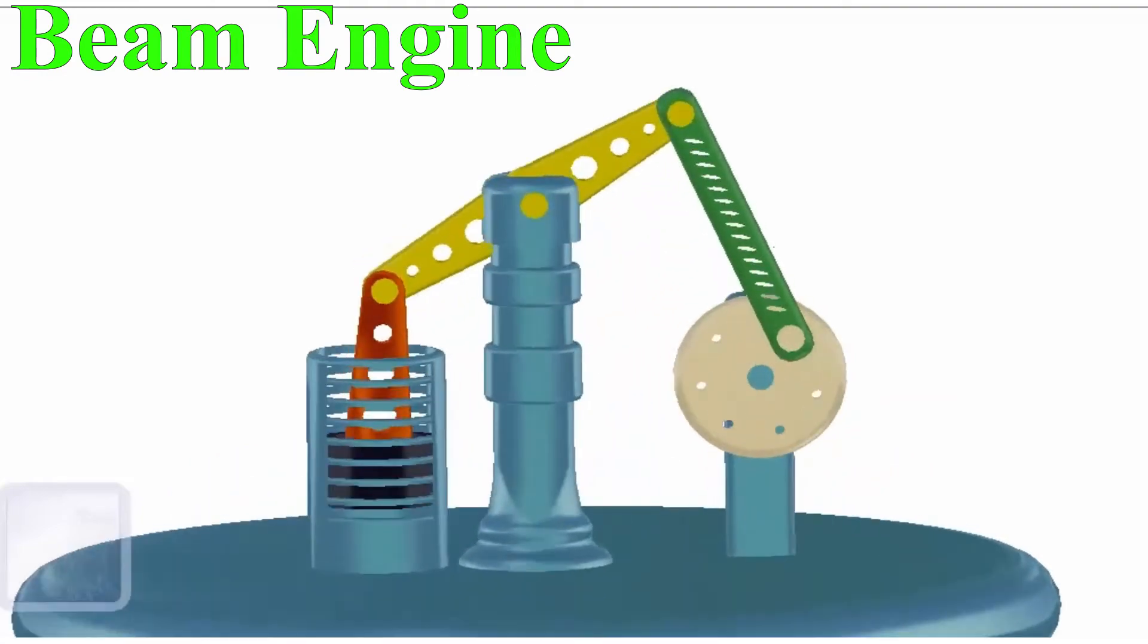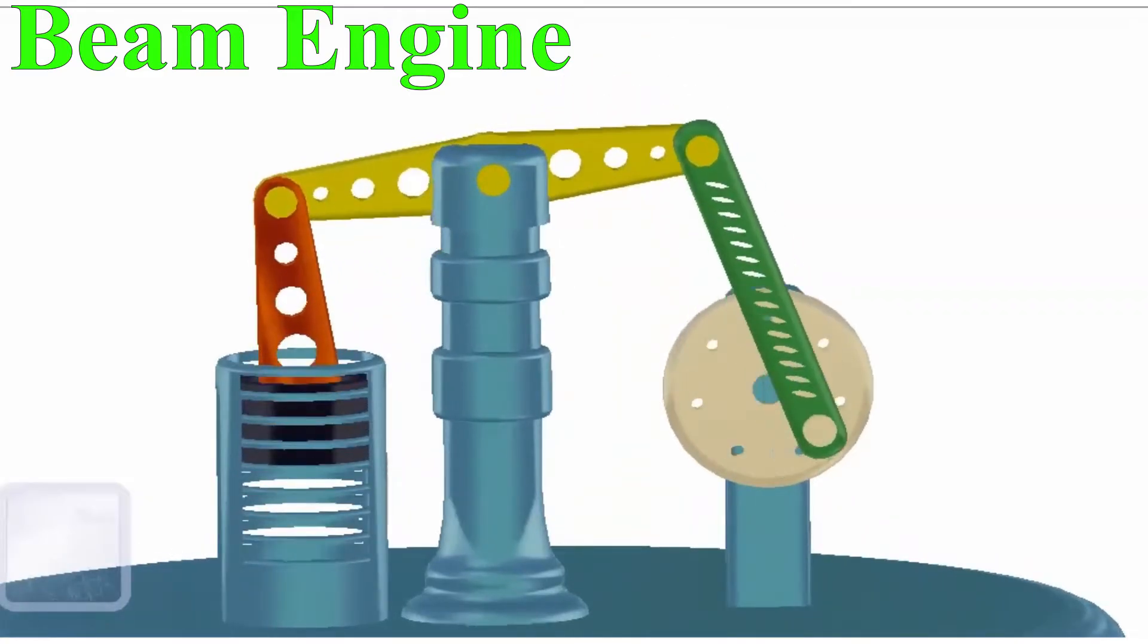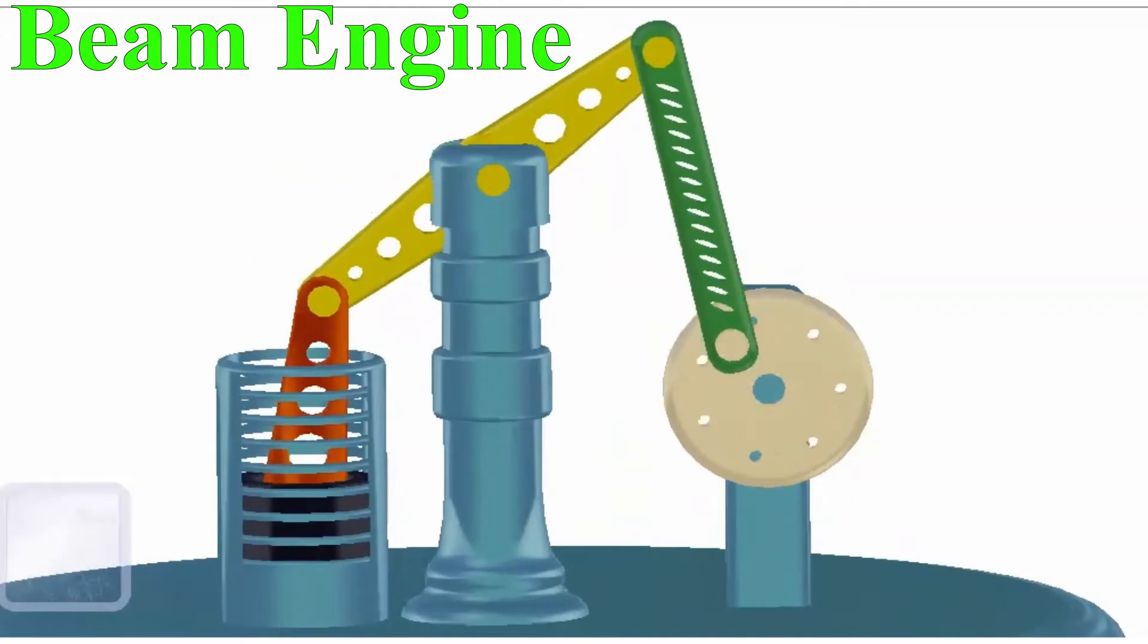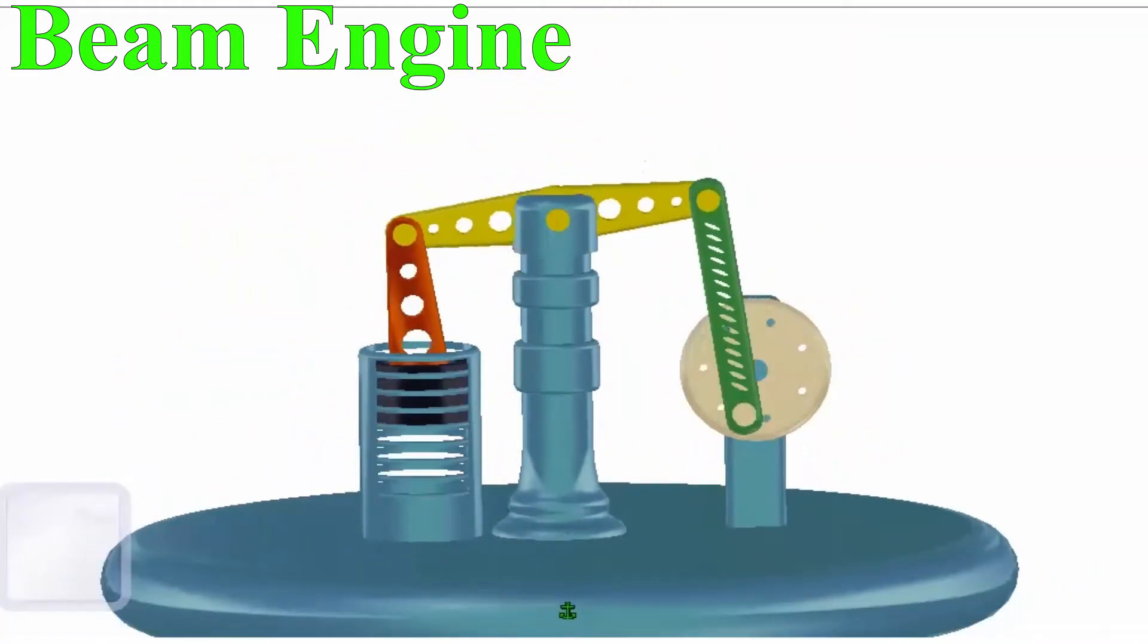It is basically a six-link mechanism that converts rotary motion of the crank into linear straight line motion of a vertical sliding link. In practice, this is used in pumps and other purposes.